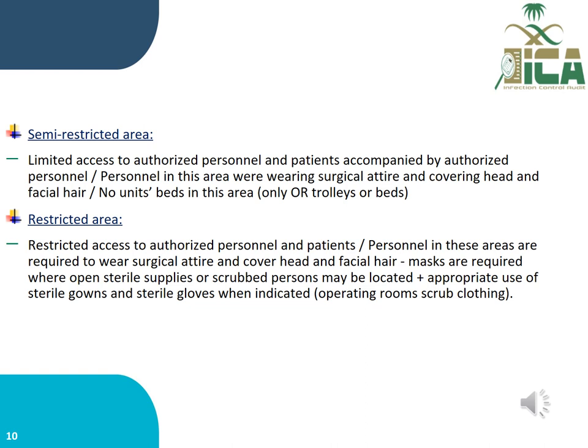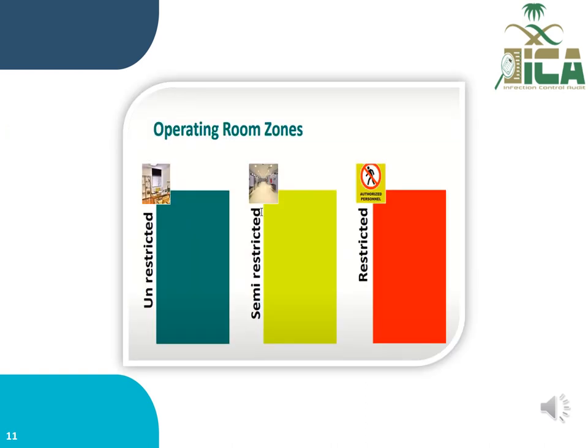Restricted area: restricted access to authorized personnel and patients. Personnel are required to wear surgical attire and cover head and facial hair. Masks are required where open sterile supplies or scrubbed personnel may be located, plus appropriate use of sterile gown and sterile gloves when indicated. Color coding for OR zones: green for unrestricted zone, yellow for semi-restricted zone, and red for restricted zone.